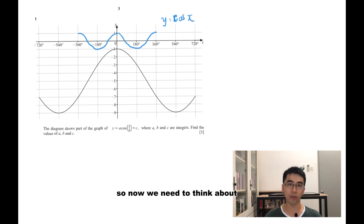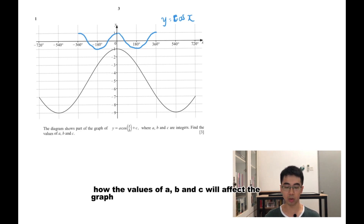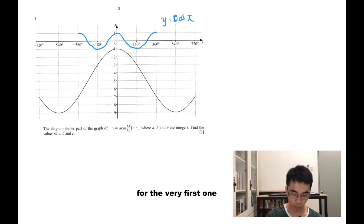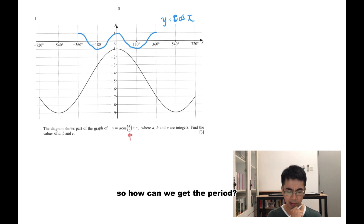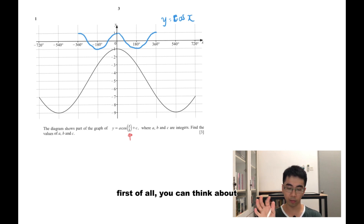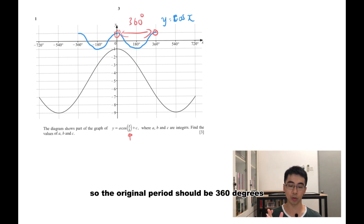Now we need to think about how this original function changes into the new function as shown. We need to find the values of a, b, and c and what they affect on the graph. For the very first one, I think about the period. The value of b will affect the period of a trigonometric function graph. One way to find the period is from maximum to maximum. For the original cosine graph, it takes 360 degrees from one maximum to the next, so the original period is 360 degrees.